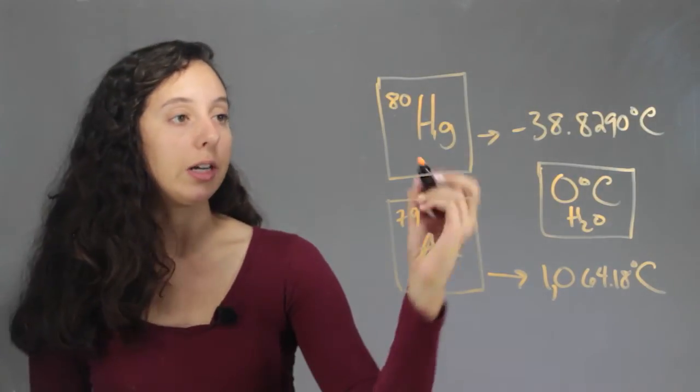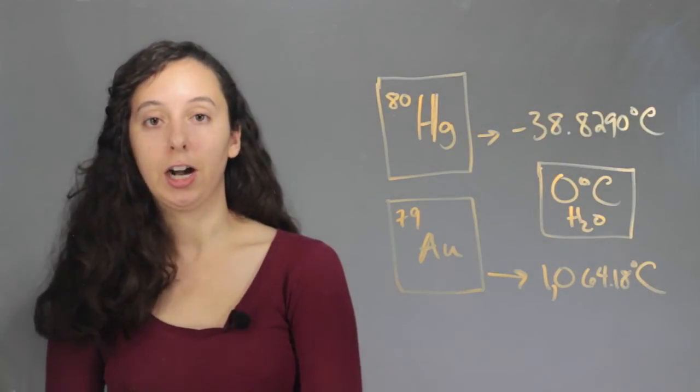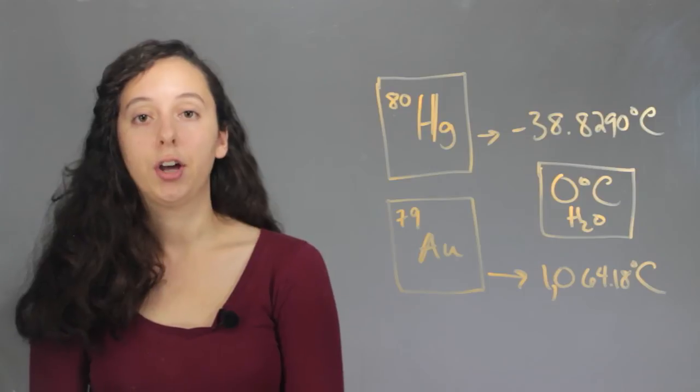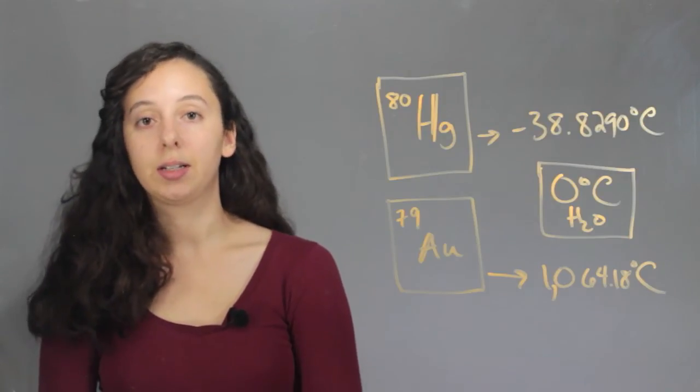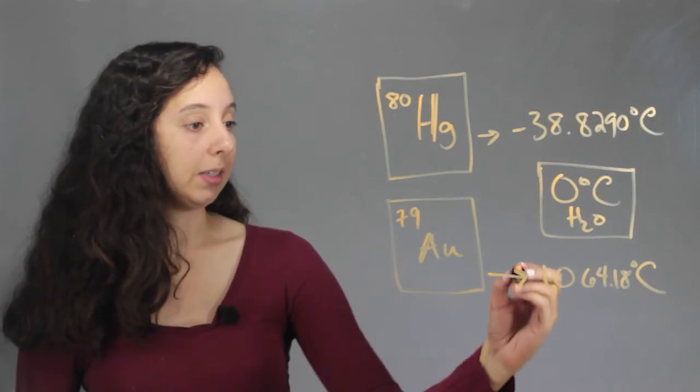And the reason that mercury is a liquid at room temperature has to do with its electron configuration. It's very complicated, but it has a certain electron configuration that allows it to melt at much lower temperatures than other metals.